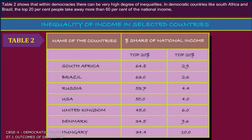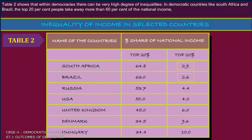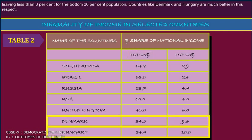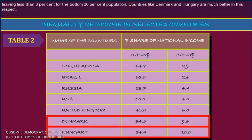Table 2 shows that within democracies, there can be a very high degree of inequalities. In democratic countries like South Africa and Brazil, the top 20% of people take away more than 60% of the nation's income, with less than 3% going to the bottom 20% of the population. Countries like Denmark and Hungary are much better in this respect.